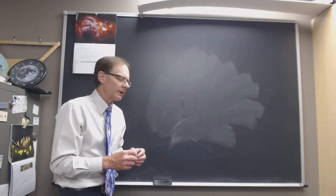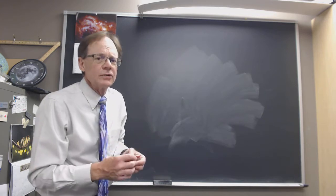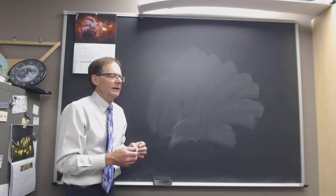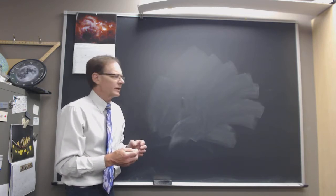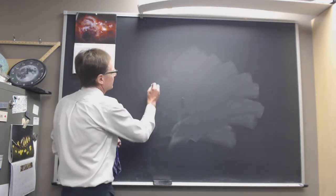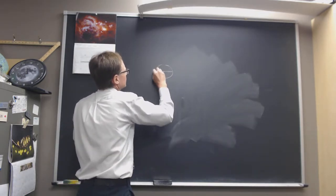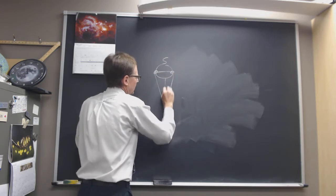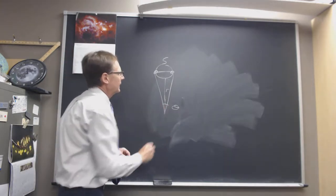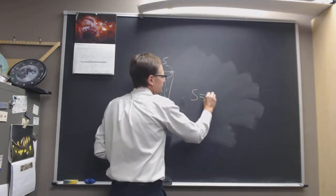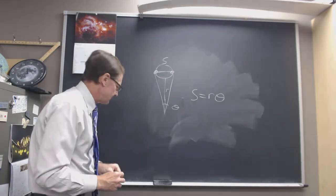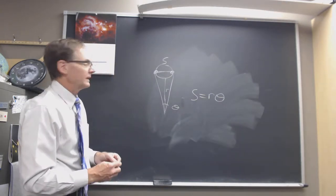The first thing we recommend you do in this exercise is measure the angular resolution limit of your eye. We provided a chart for you to use, and we're going to use the idea that the separation S of two objects equals R times theta, where R is the distance from the object, S is the separation of the two objects, and theta is the angle between them in radians.